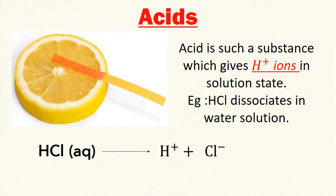First, let's understand what are acids. Acid is a substance which gives H+ ions, that is hydrogen ions, in solution state. For example, hydrochloric acid dissociates in water solution. Dissociate means it separates. We have the chemical equation: HCl dissociates and gives hydrogen plus chlorine ions.